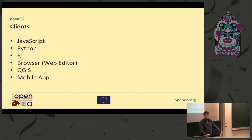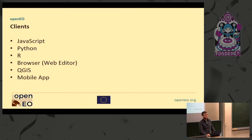We have several clients implemented at the moment. We are tackling JavaScript, Python, and R at the moment, which should cover most of the geospatial community. Maybe there's Julia in the future as well, but we'll see. We have a browser-based application as well for users that are not so much into programming — it pretty much works like a model builder in ArcGIS or QGIS. Then we have a QGIS implementation where you can use it as a plugin, start jobs from QGIS, and download and show results in QGIS directly. And there is a mobile app as well.